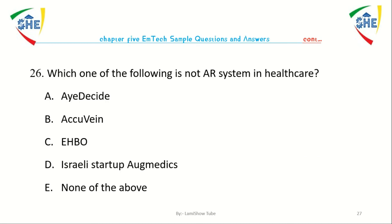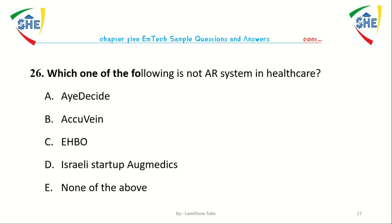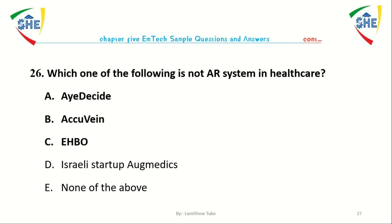Question number 26: Which one of the following is not an augmented reality system in healthcare? A) iDecide, B) AccuVein, C) Phbo, D) Israeli startup Augmedics, E) None of the above.